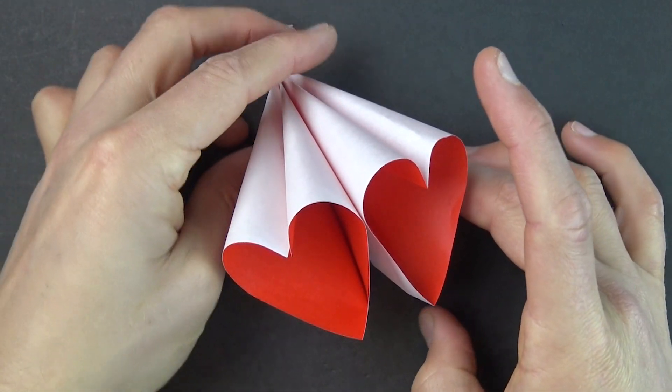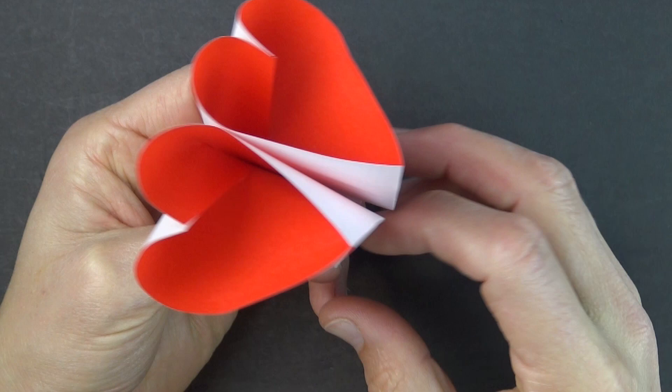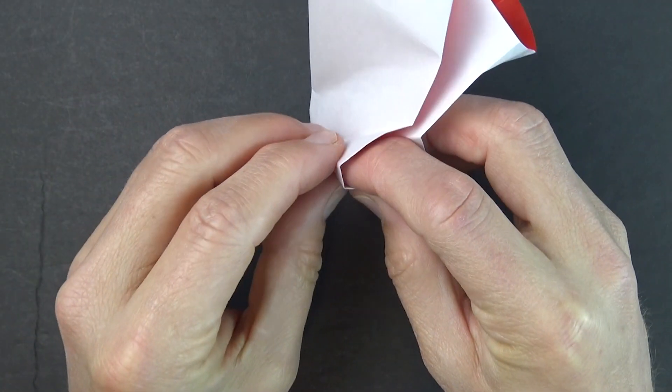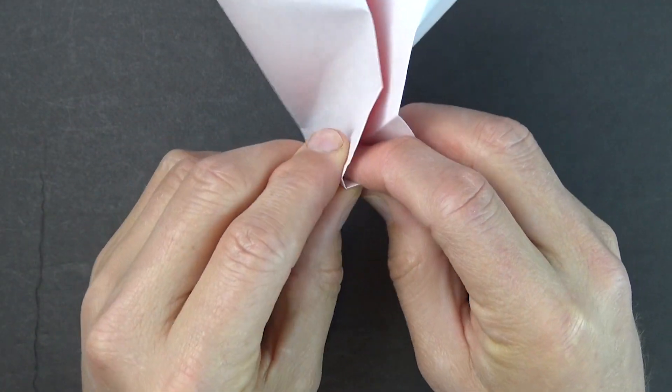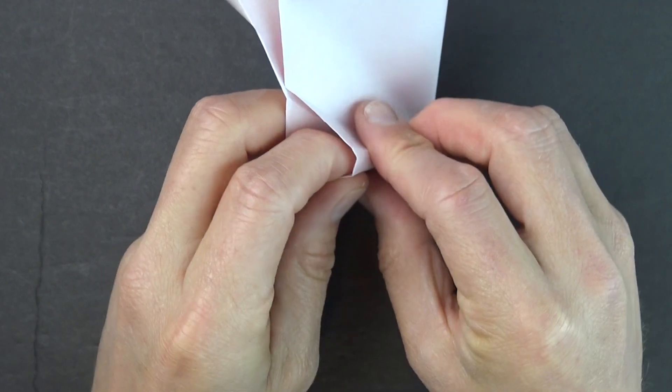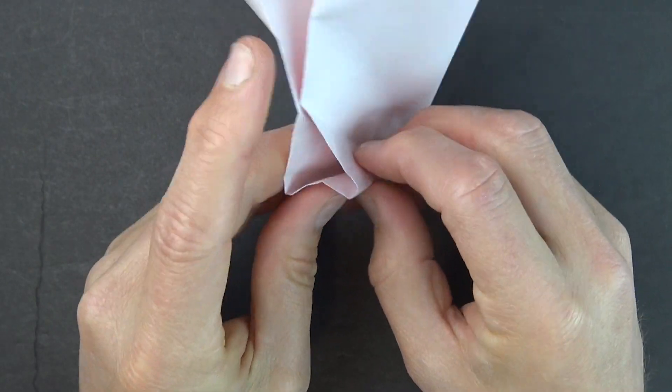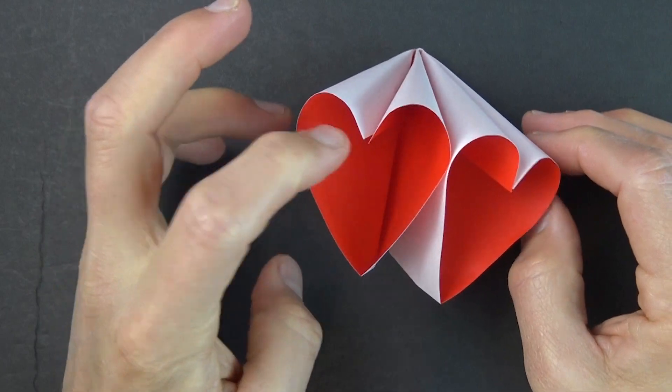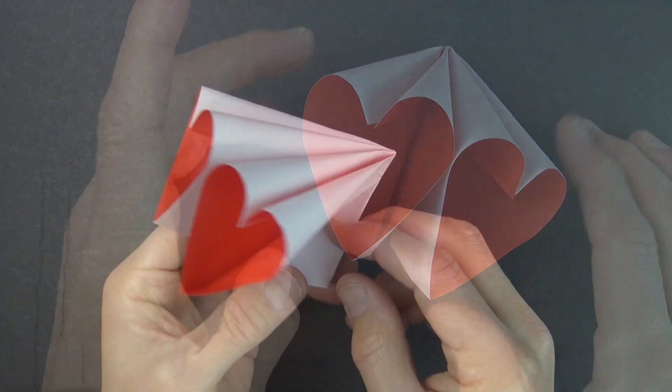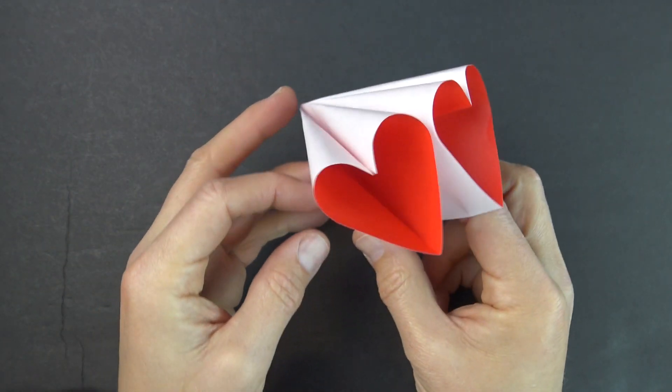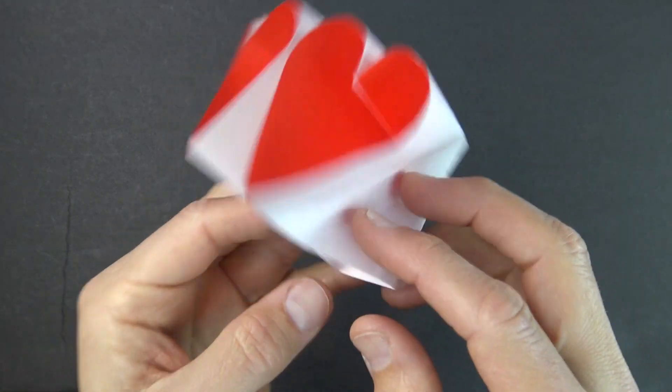And if you want the hearts to be pointing up a little bit more, then just adjust these folds so that they stand up a little bit more. Alright. So there you have it. Two hearts zooming through space.